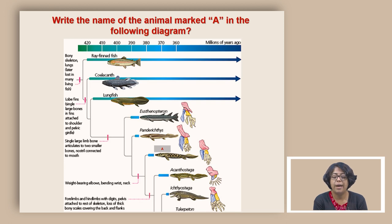Write the name of the animal marked by A in the following diagram. This is the animal that we are asking about. Let us try to look at what are the groups that are nearby. Definitely they are fish-related groups. This is ray-finned fish and then there is a lobe-finned fish and within the lobe-finned fish there is this lungfish.